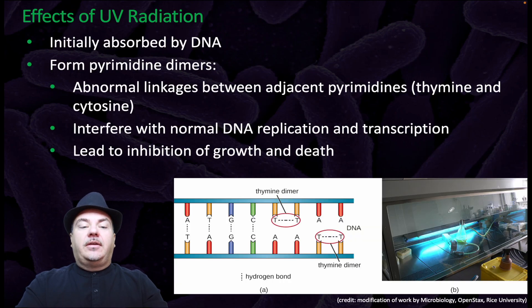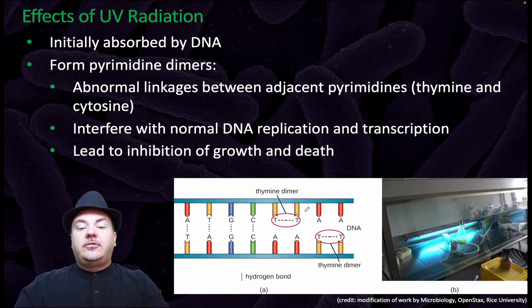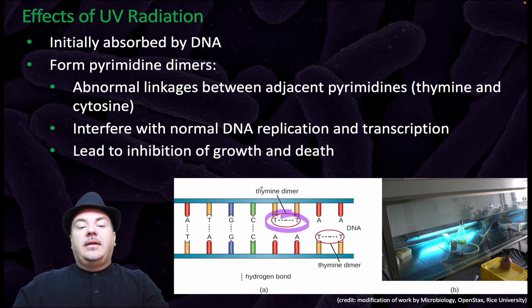The effects of UV radiation: ultraviolet radiation is initially absorbed by DNA. It then forms pyrimidine dimers, which are abnormal linkages between adjacent pyrimidines — thymines and cytosines. This interferes with normal DNA replication and transcription and leads to inhibition of growth and death.